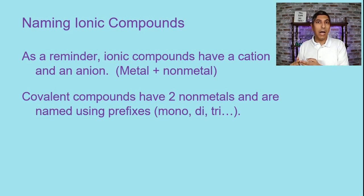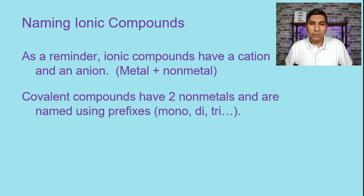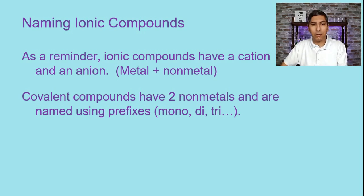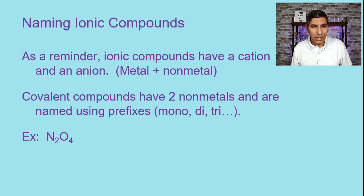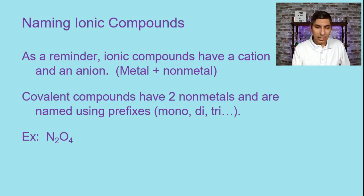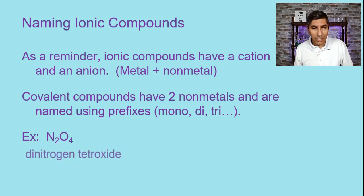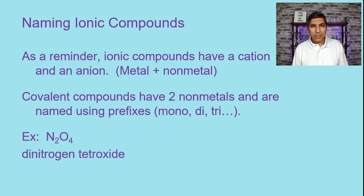Mono, di, tri, tetra — those are some numeric prefixes you might use for a covalent or molecular compound. For example, N2O4 has two non-metals, so it's a covalent compound. We would name that using the prefixes: dinitrogen tetroxide. That's how you'd name covalent compounds.